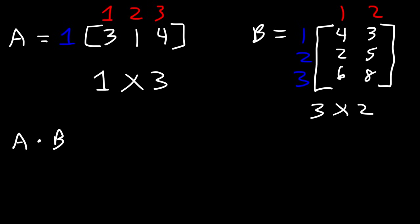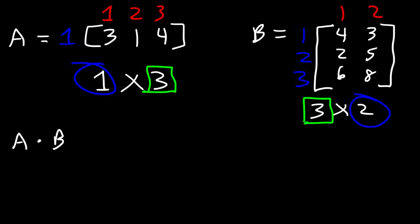When you're multiplying matrices, the number of columns in the first matrix has to equal the number of rows in the second matrix. Those two numbers are the same so we can multiply A and B. If those numbers are different we can't multiply the two matrices. The resultant matrix that we get will have one row and two columns.